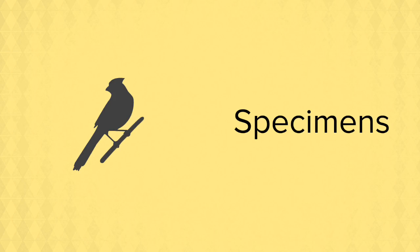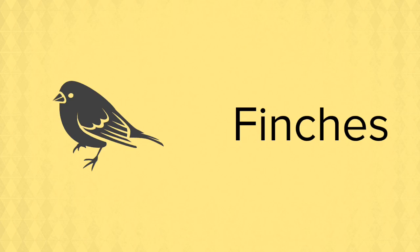Darwin spent a number of weeks on these islands where he collected various specimens, among which were many varieties of birds. Back in the UK, Darwin presented his specimens to an ornithologist, a bird specialist in one of the museums, who informed him that he'd actually collected a number of species of finch.